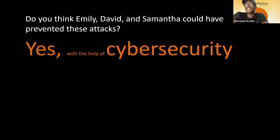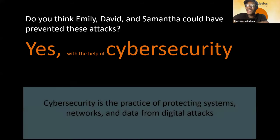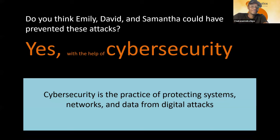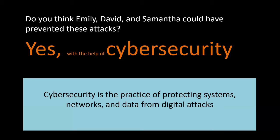Joshua is now going to walk us through how these attacks could have been prevented. Good evening everyone — I'm Joshua. The three scenarios we heard about — Emily, David, and Samantha — could be anyone. They could be a colleague, a brother, a family member, or a friend.